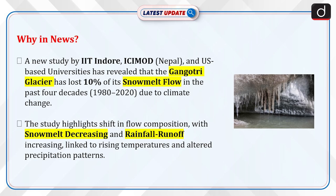A new study by IIT Indore, ICIMOD Nepal, and US-based universities has revealed that the Gangotri Glacier has lost 10% of its snowmelt flow in the past 4 decades, from 1980 to 2020, due to climate change. The study highlights a shift in flow composition, with snowmelt decreasing and rainfall runoff increasing, linked to rising temperatures and altered precipitation patterns.